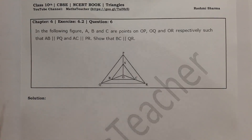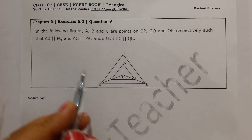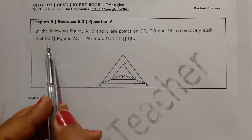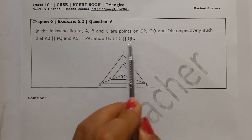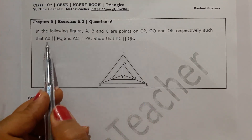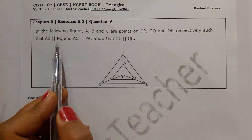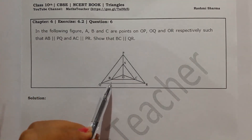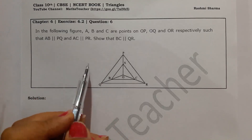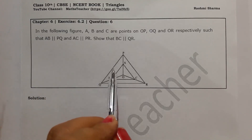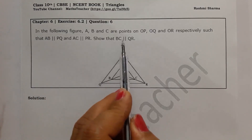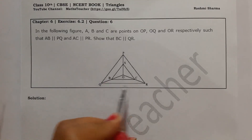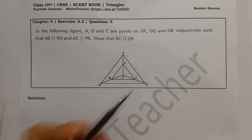This question is similar to question number 5 which we have already solved. The strategy here is: we have two parallel lines given and a third we have to prove. When we have a side given as parallel in a triangle, we use the BPT theorem — the Basic Proportionality Theorem. And when we have to prove a line parallel to a side of a triangle, we use the Converse of BPT theorem.